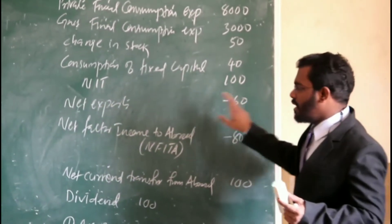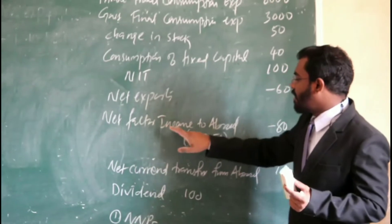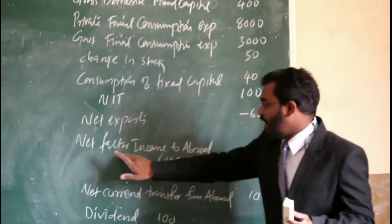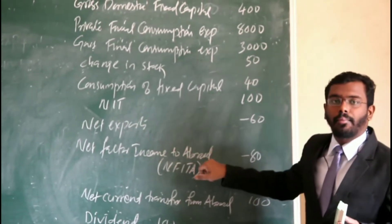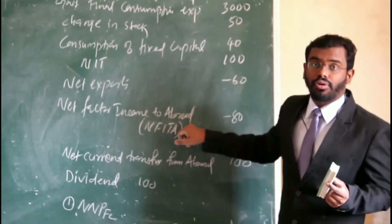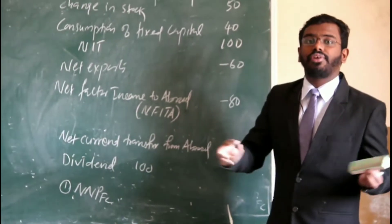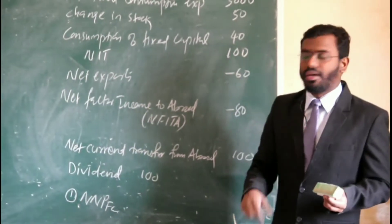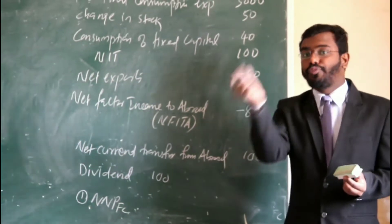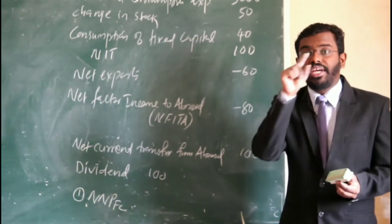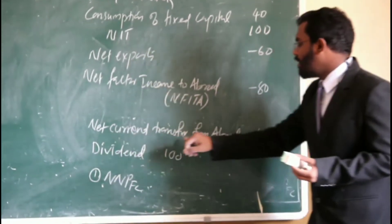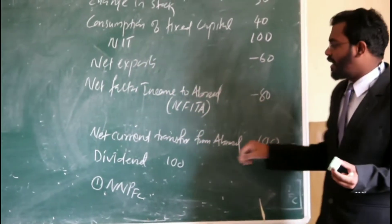Net export is minus 60. Next, net factor income to abroad — keep in mind, it is not net factor income from abroad. If we get net factor income from abroad, we will add. Here we got NFYTA, net factor income to abroad, so here we need to subtract. Next, net current transfer from abroad, that is 100.